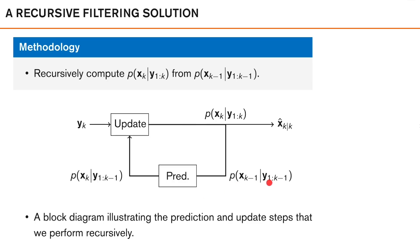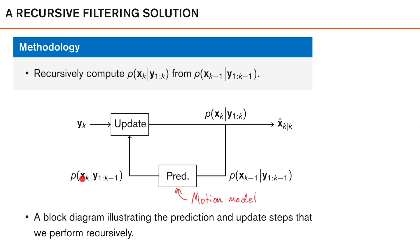We assume that we have computed the posterior density from the previous time instance — that is, p of xk minus 1 given measurements up to time k minus 1. The next step is to take this density, which summarizes what we know about the state at time k minus 1, and predict it in time so that it says something about the state at the current time. We want to calculate this predicted density using a prediction step where we use our motion model. After the prediction we get what is called the predicted density — the density of the state at the current time given measurements up to the previous time instance.